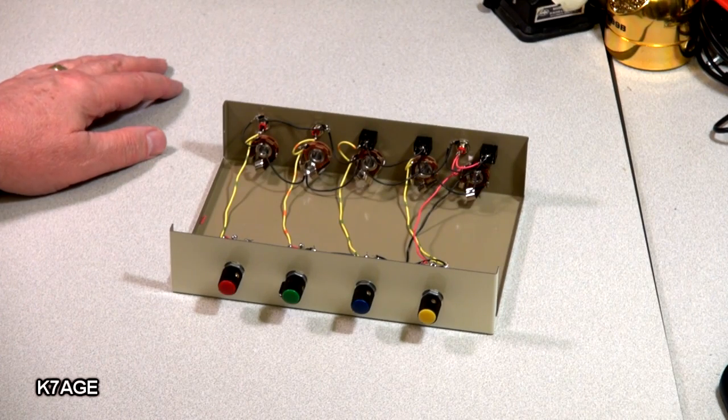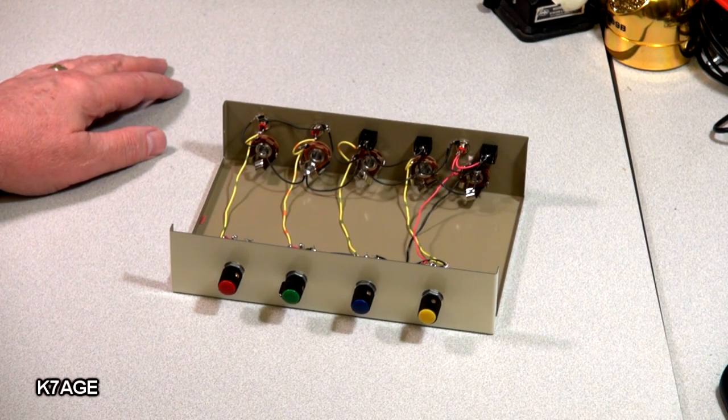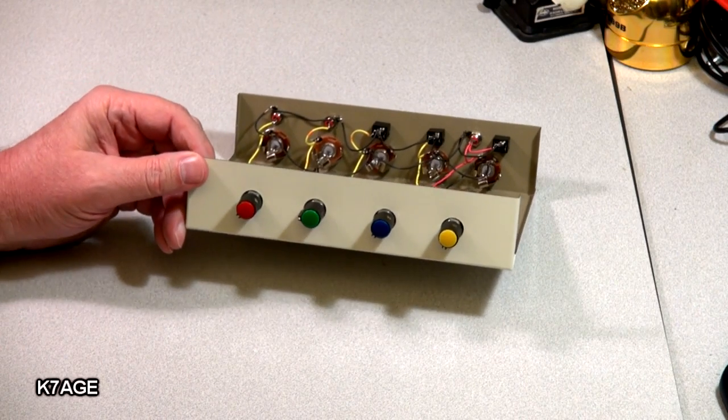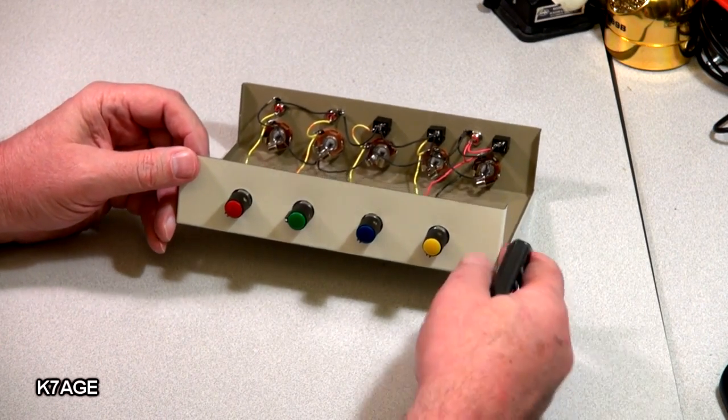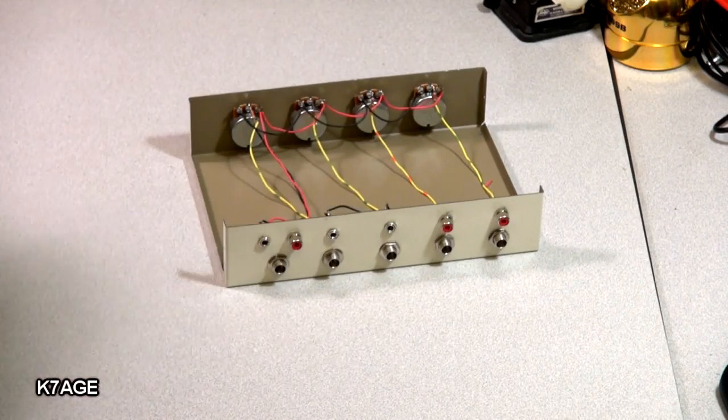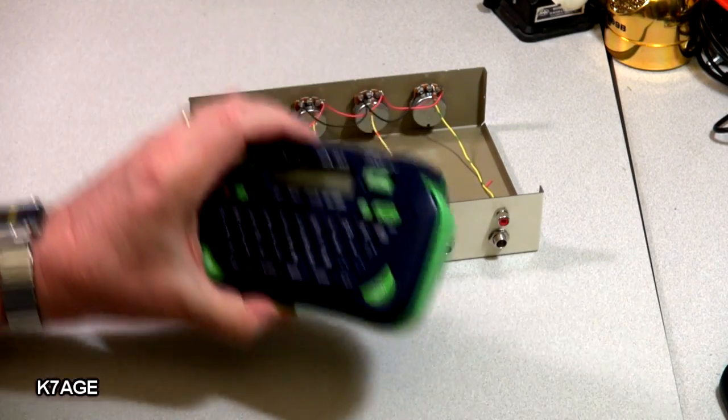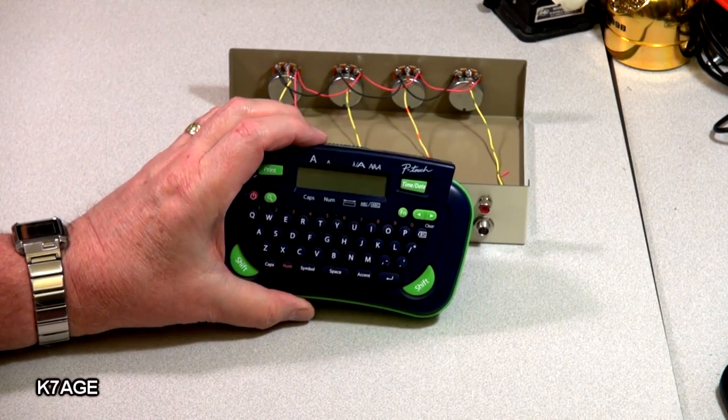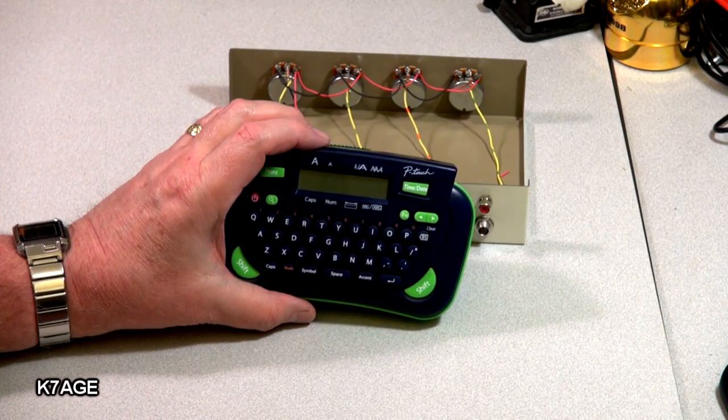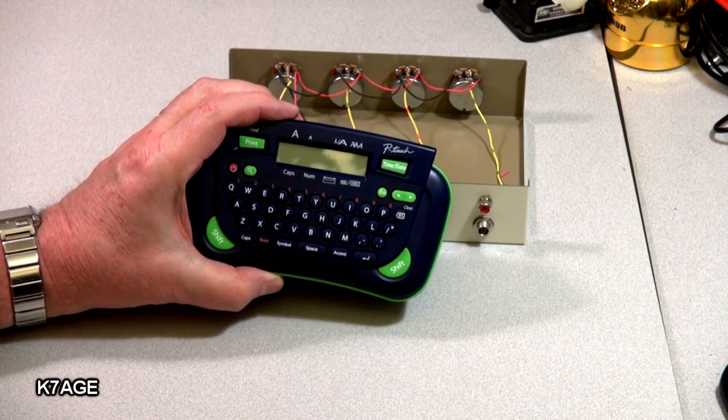Hello, Randy K7AGE in the fourth video of Bob's Mixer. I'm just going to finish it off and we'll give a little test and see how it plays. So this is where we left off with all the wiring and what I'm going to do now is use my little label maker here, make some labels and put the top on it, put some feet on it and give it a try.